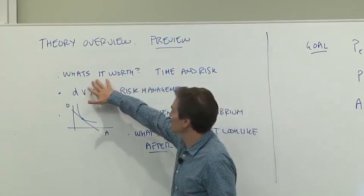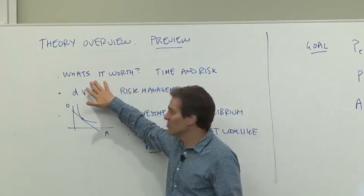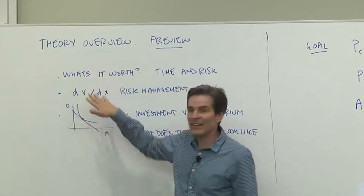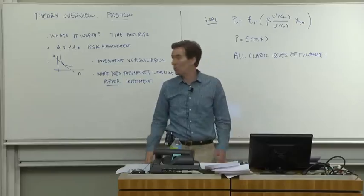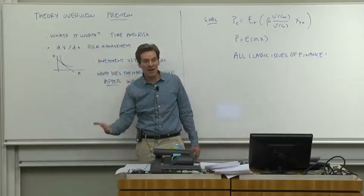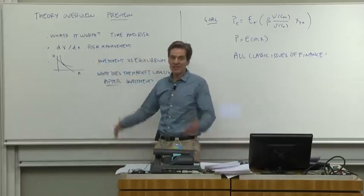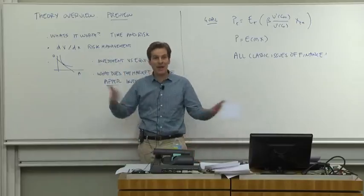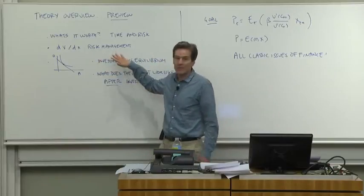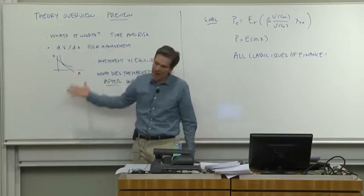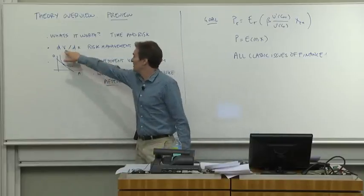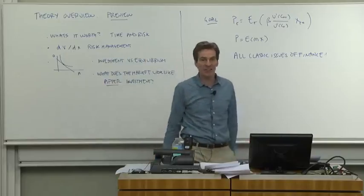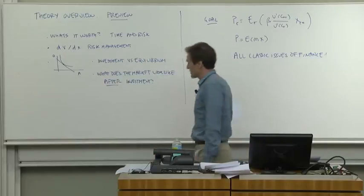Once you have a formula for what something's worth, that can also be useful for calculating derivatives. How much would the value change if something happened in the world? If oil prices go up, how does my portfolio get affected? If interest rates go up, does my bank blow up? Risk management, the art of risk management is guessing how things will change if things in the environment change. And once you have the value itself, you can calculate derivatives and do risk management.